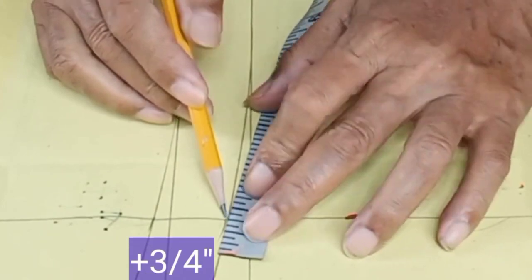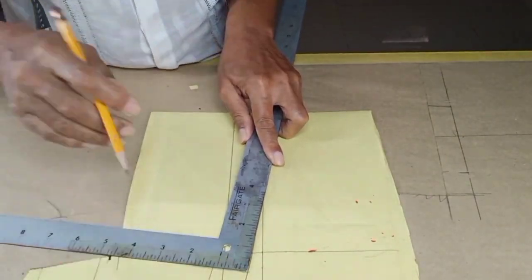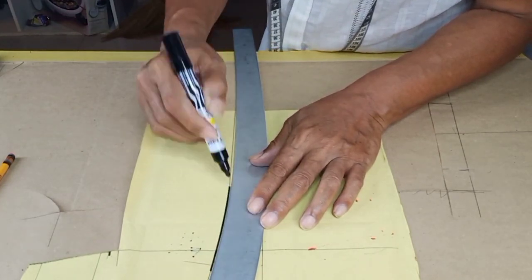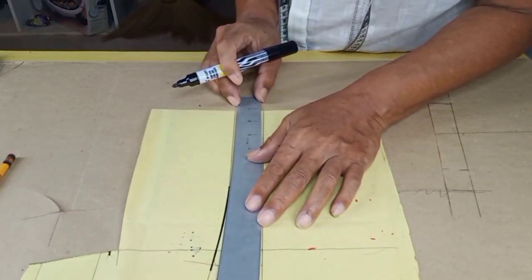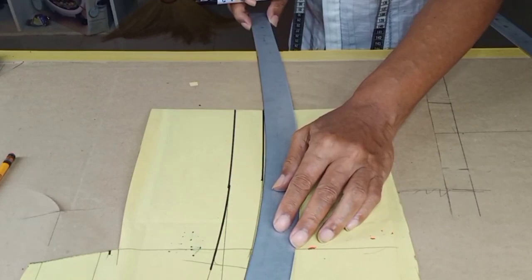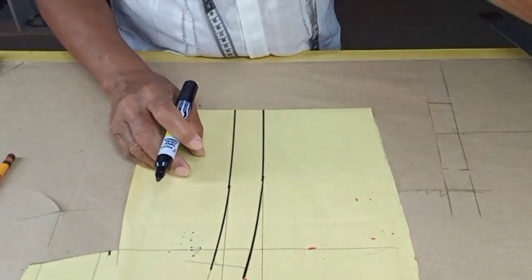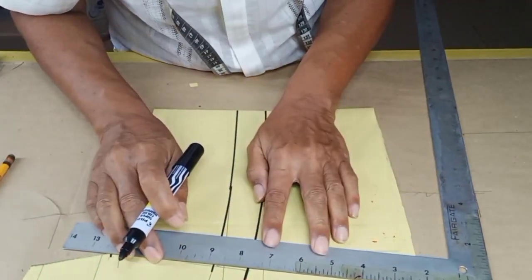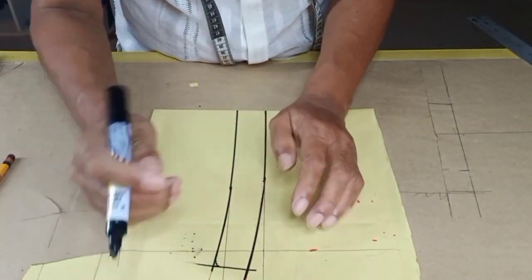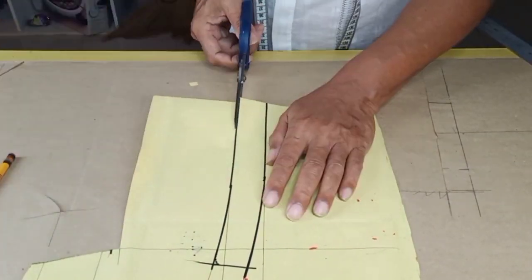And from this point, add three quarters of an inch. Then square it upward. And then darken the two lines for it is final. And this should be rounded a little bit upon cutting. Let us now cut our stand to the collar.